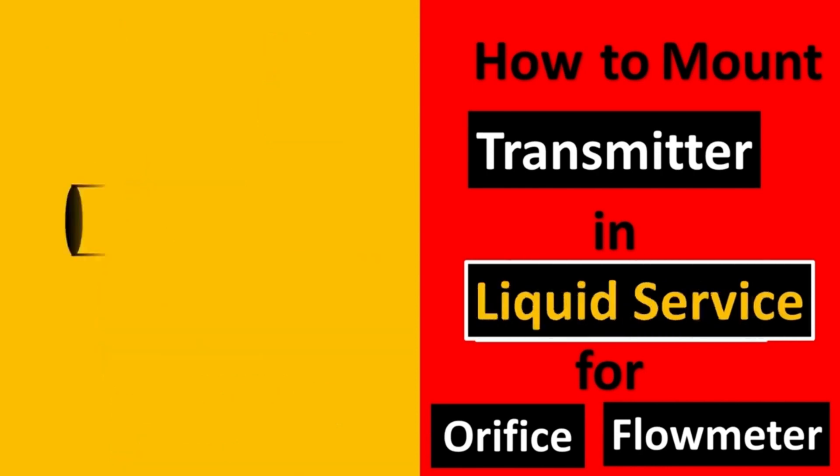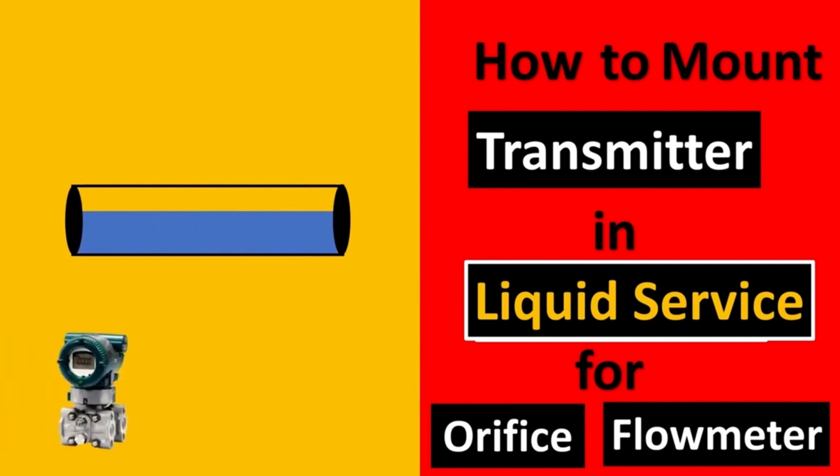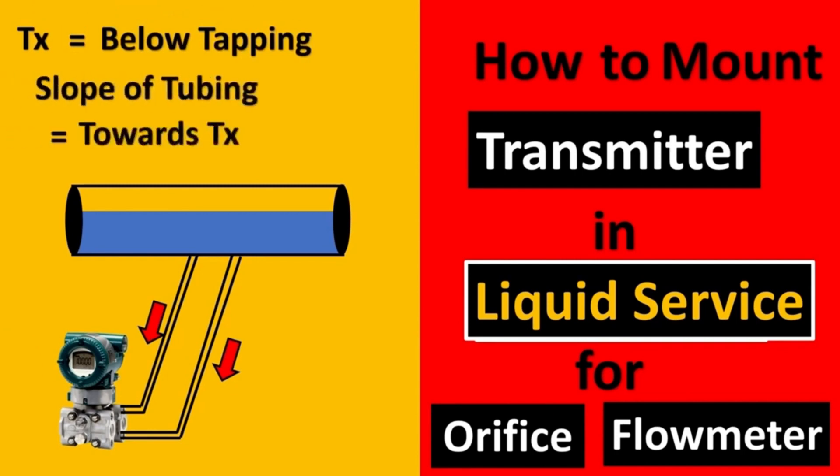Now the next question is what do you do in liquid services? In liquid services, the transmitter would be below the tapping and the slope will always be towards the transmitter and not towards the pipe. Why? Because you want the liquid to be trapped here, and if there is any gas which is lighter, it will always stay up and never come to your transmitter. Thus the gas would not get trapped inside your impulse lines.